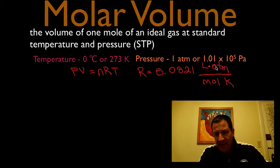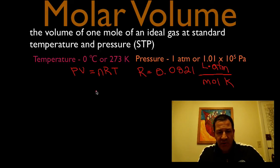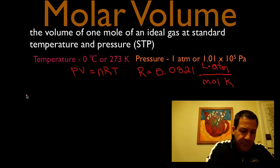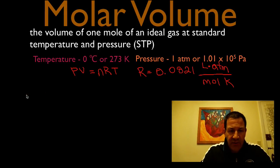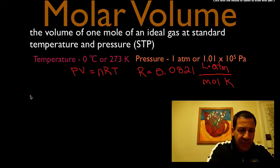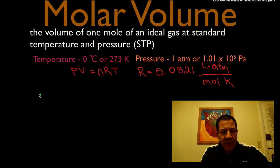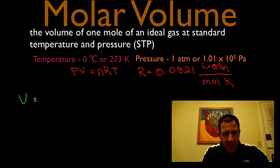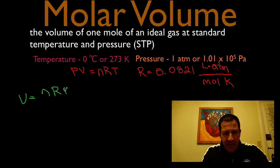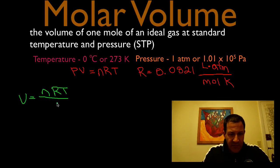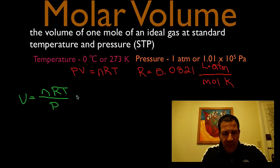This gas constant has atmosphere in it as part of its units. So we're going to use 1 atmosphere for the pressure. We're solving for the volume, so from the ideal gas law we get volume equals nRT over pressure. We know that n is 1 mole because we want the volume of one mole.